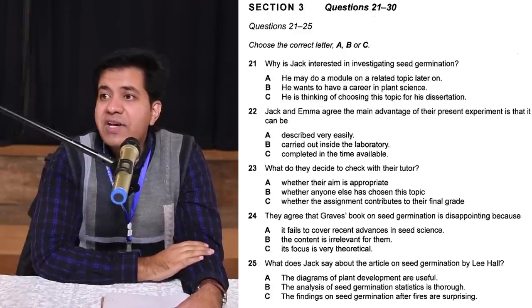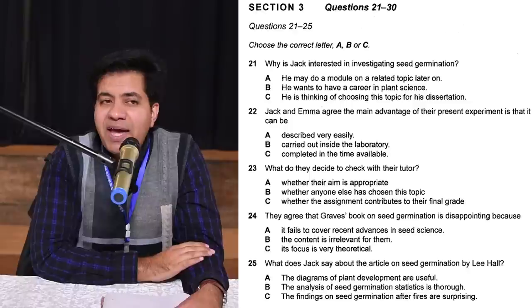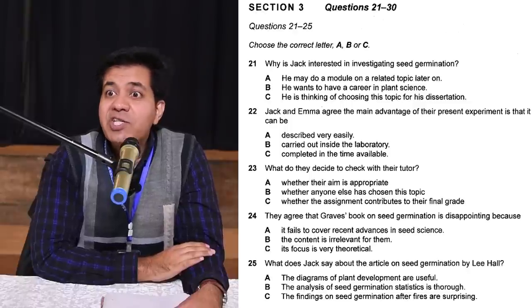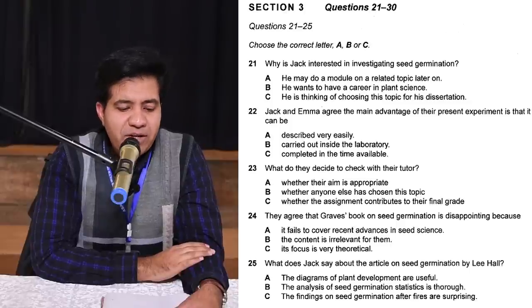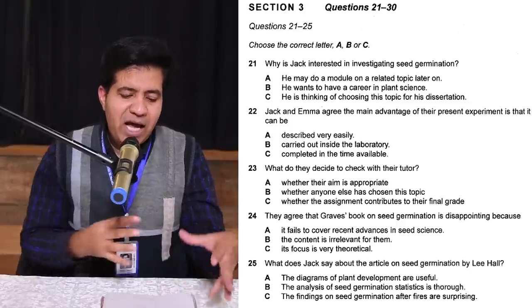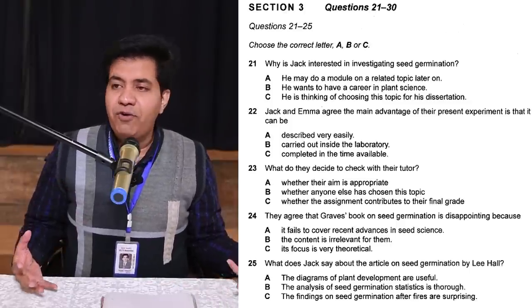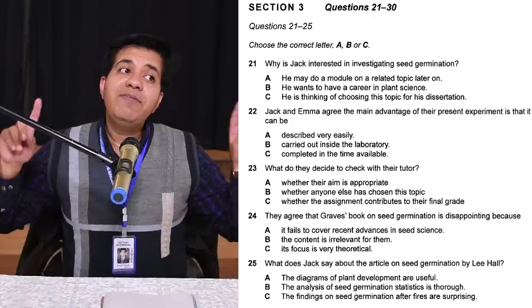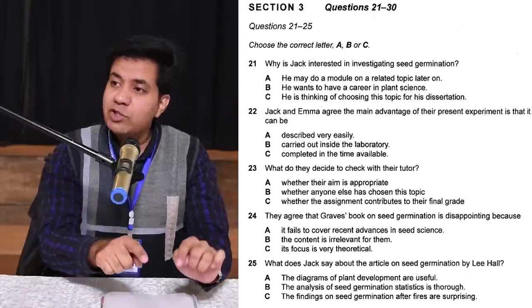Option C: thinking of choosing this topic for his dissertation. If he says 'if I study this then I don't have to do any dissertation,' that can be a trap; or if he says 'I'm planning to do this topic for my dissertation,' then that can be the answer. They will talk about all three options. Let's play the audio now.